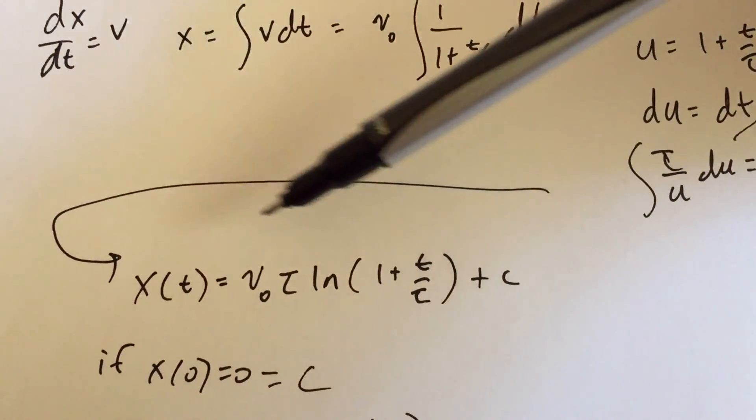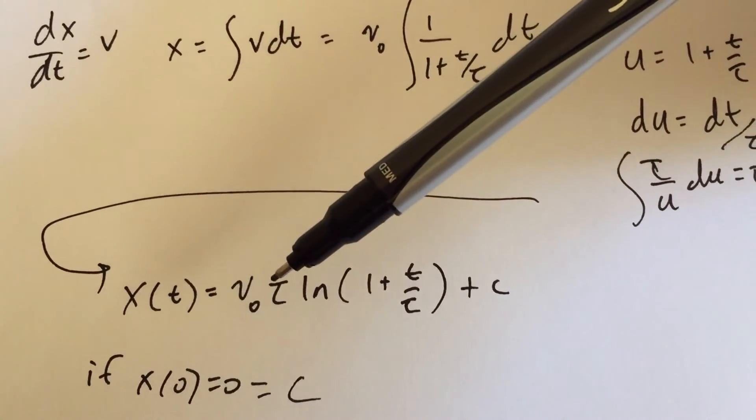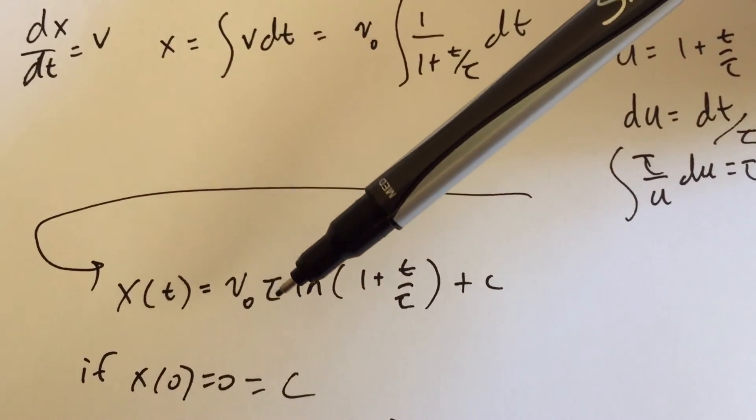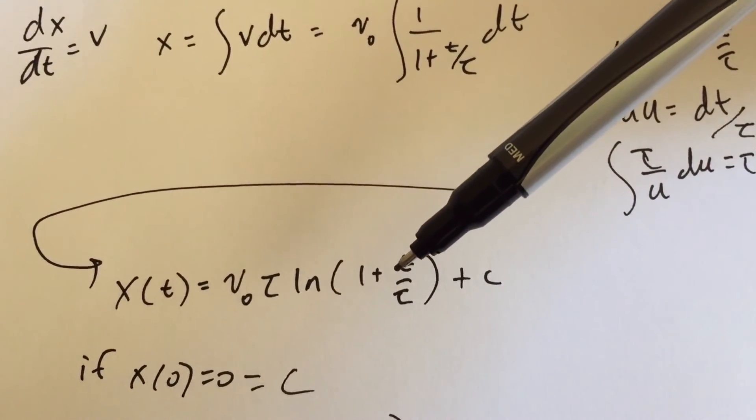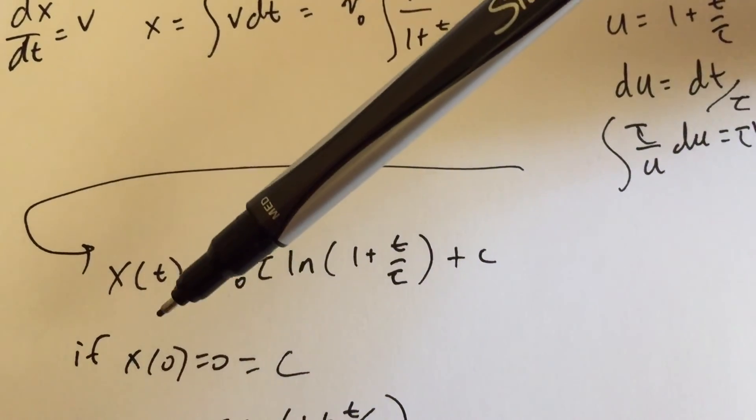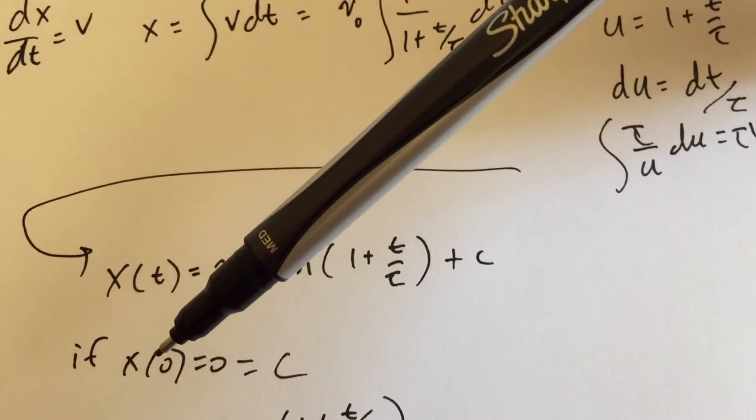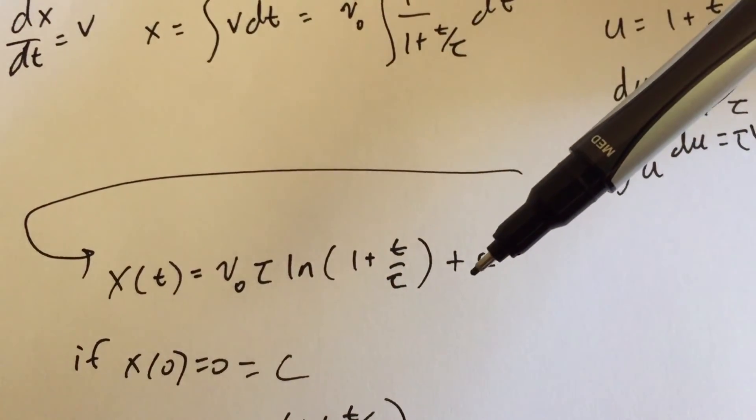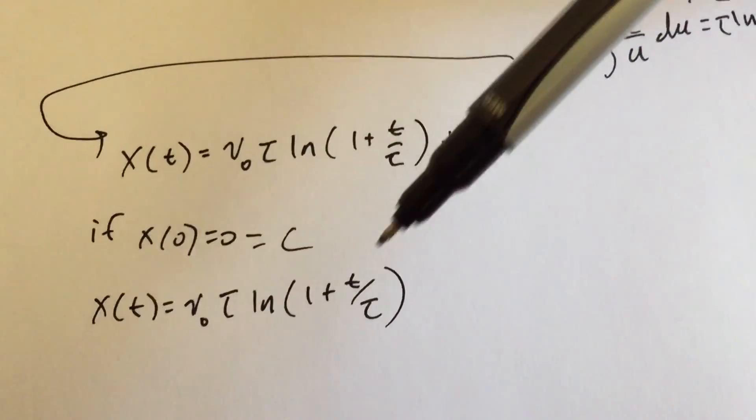So when I do that, I get x is a function of t, is v₀ tau natural log of 1 plus t over tau plus constant, and then if at time t equals 0, x is equal to 0, then that c would have to be also 0. So you get that. Boom.